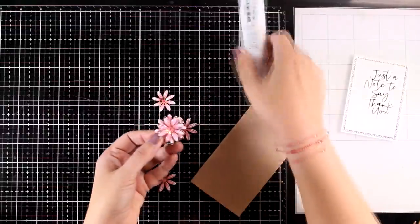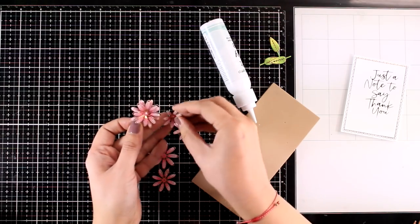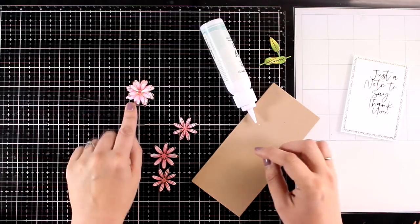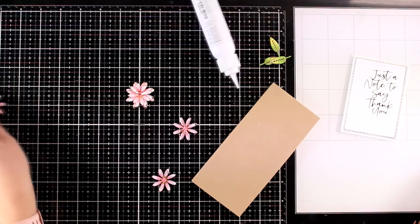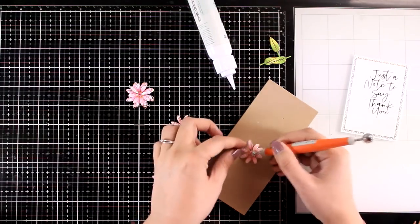So here for the first flower I'm adding a dot of glue at the center and stacking three layers of petals one on top of the other, offsetting the petals so that it looks fluffier and that's the first flower. Now for the second one just two layers, middle and small one.